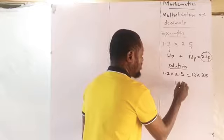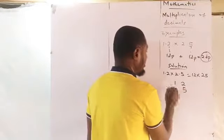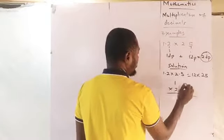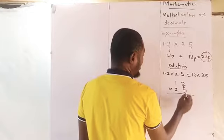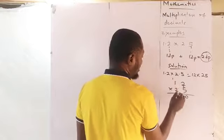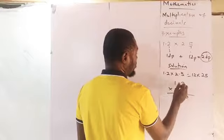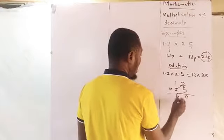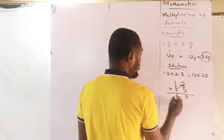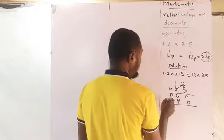Multiply the two numbers without the decimal points. You've been taught how to multiply numbers in your previous classes. 5 times 2 is 10 — write the 0, carry 1. 5 times 5 is 5 plus the 1 you carried: 6. Clean that carried number, don't make a mistake with it. 2 times 2 is 4 — write it directly under the 2 line. 2 times 1 is 2. Fill the gap with 0.